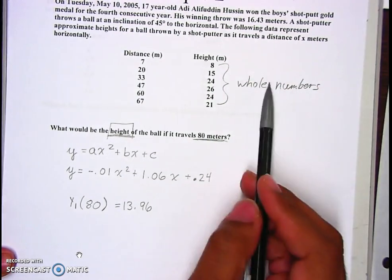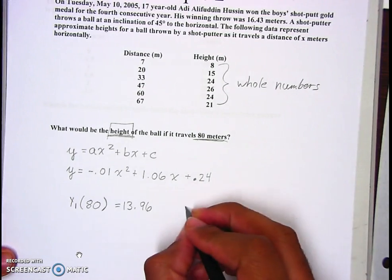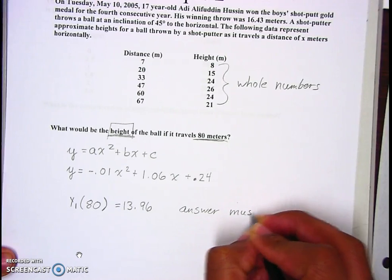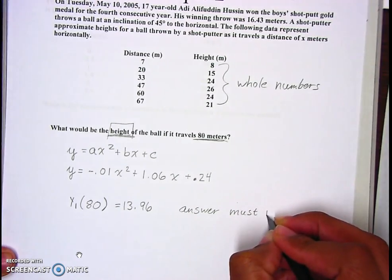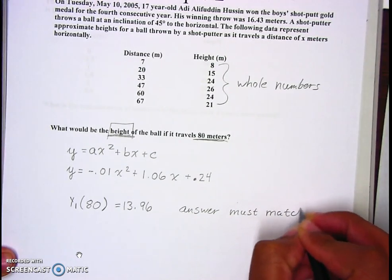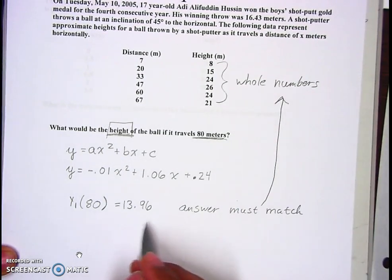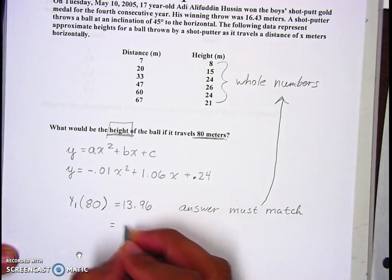Since all those are whole numbers, that means your answer must be a whole number. Here we're going to say that's 14 meters, and make sure you write a sentence out.